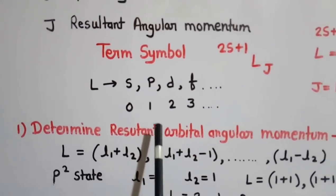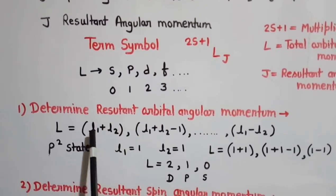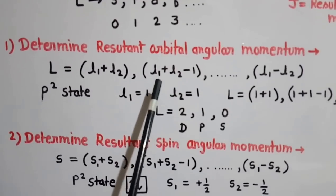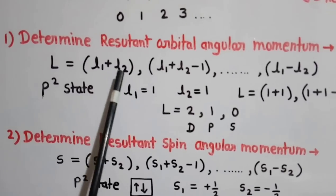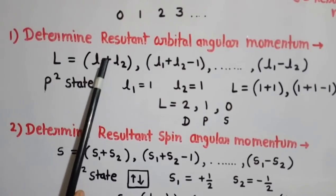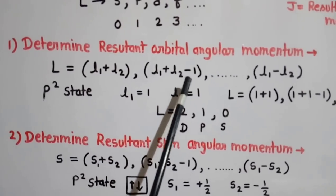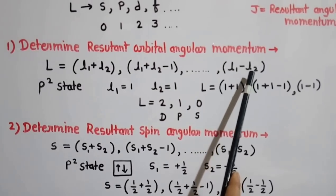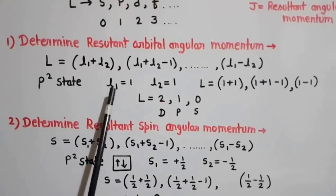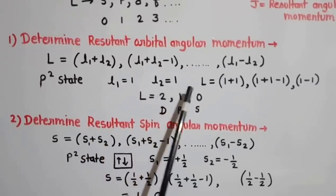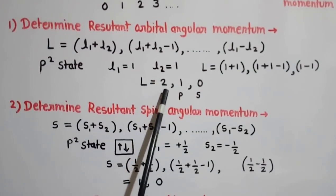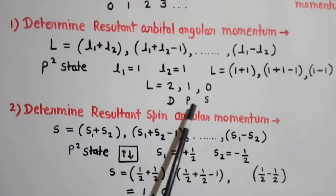To determine the resultant angular momentum and term symbol, there are 3 steps. First, we determine the resultant orbital angular momentum L by vectorial combination: L = L1+L2, L1+L2−1, and so on down to L1−L2. For example, in the P² state, L1=1 and L2=1, so L takes values 2, 1, and 0, represented by the states D, P, and S.